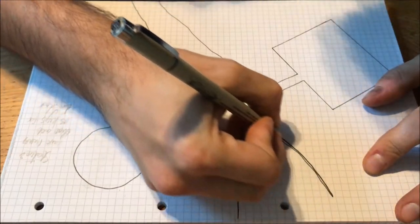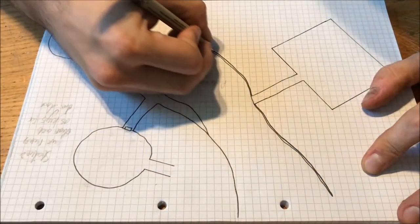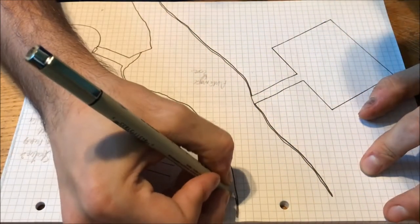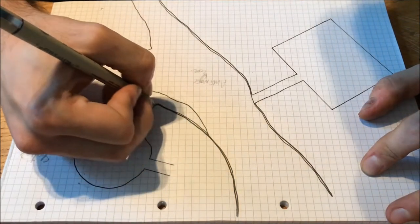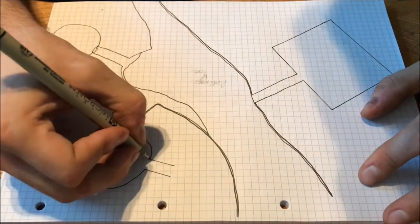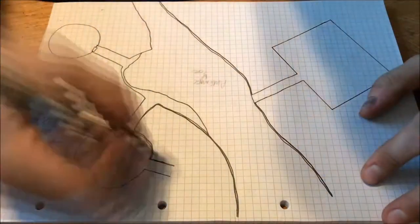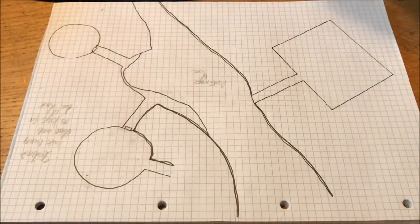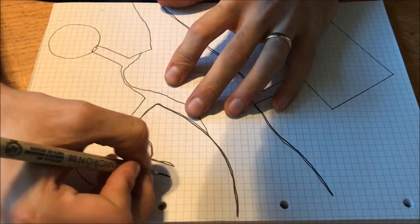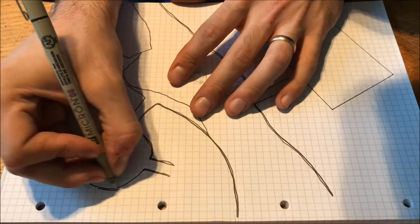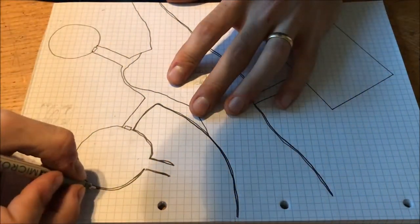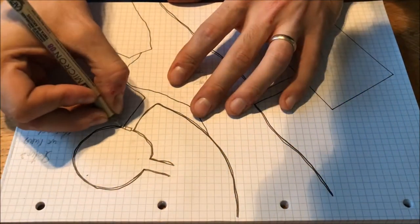Once I've inked all the initial lines, I'll then do something that Hanker and Furnail over at Runehammer Games showed during a live stream a while back which is to then very roughly follow the same lines and then fill them in to give a sense of line weight and to give a sense of depth and kind of a natural feel to those lines.